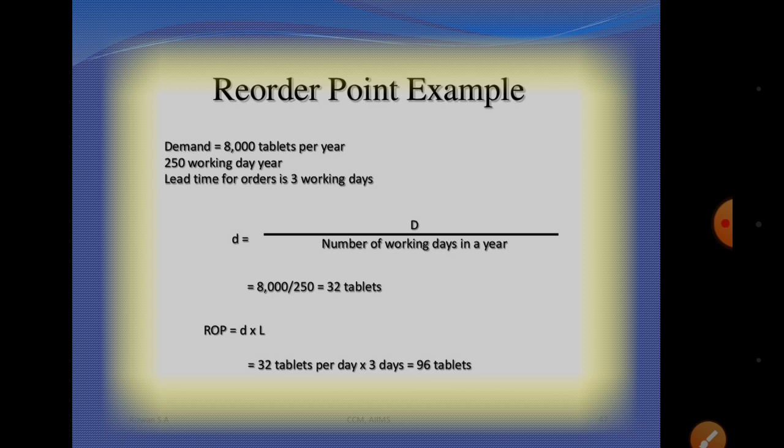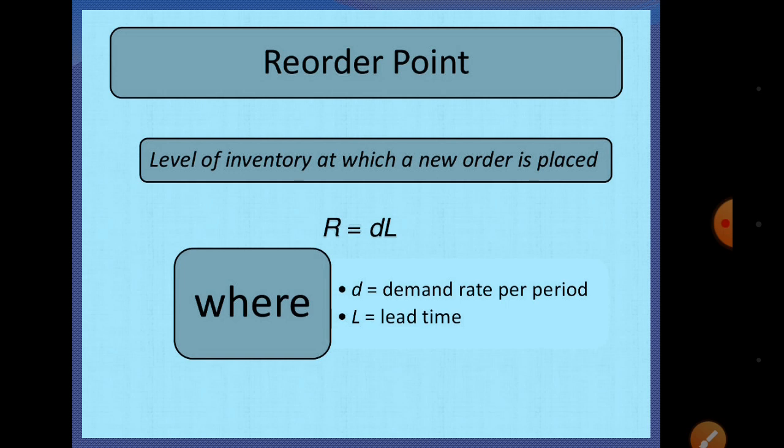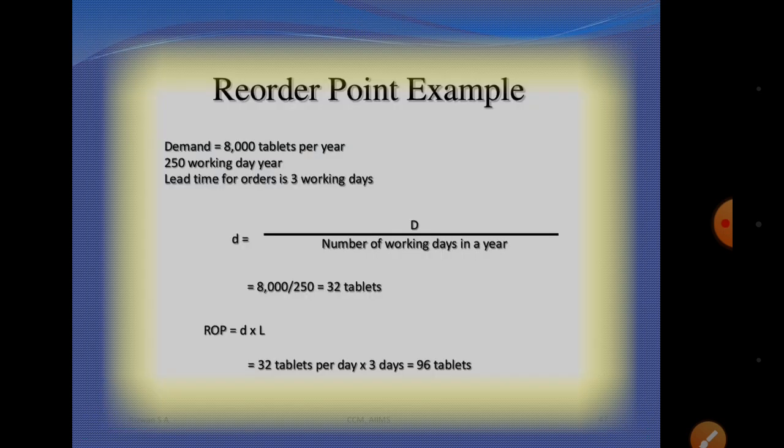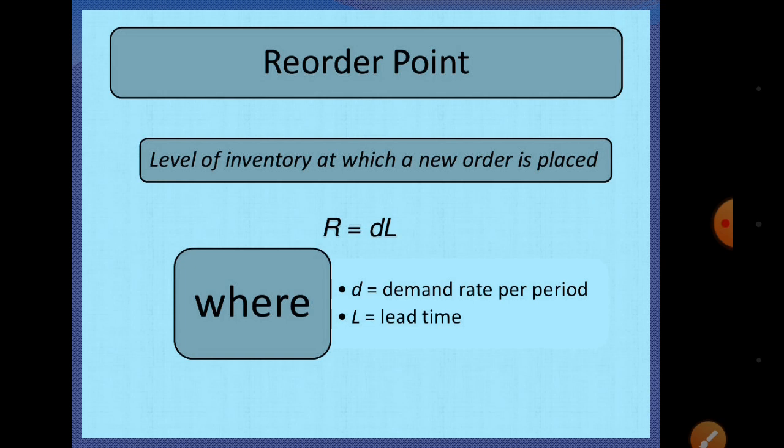Now the reorder point: R equals d into L, which is 32 tablets per day multiplied by 3 days, giving 96 tablets. So the level of inventory at which a new order is placed is 96 tablets. When the inventory reaches 96 tablets, a new order is placed at that time.